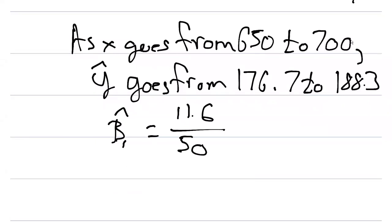Divided by 50. That was the value between 650 and $700 per acre. And so our result then is 0.232, which would be our value for beta one hat.